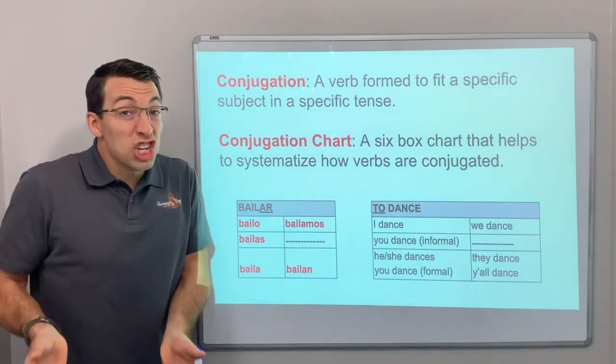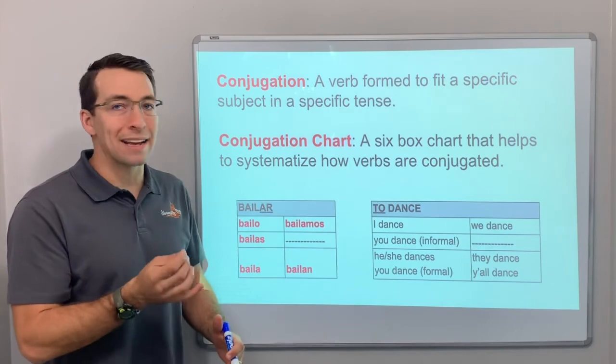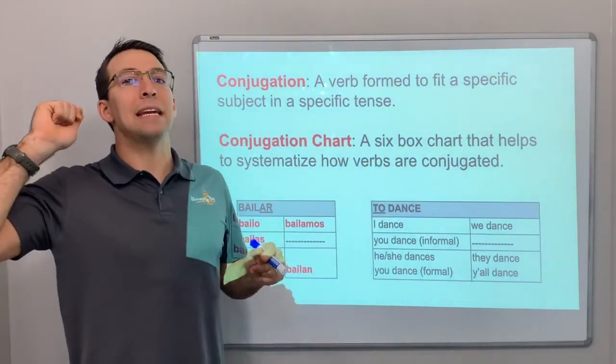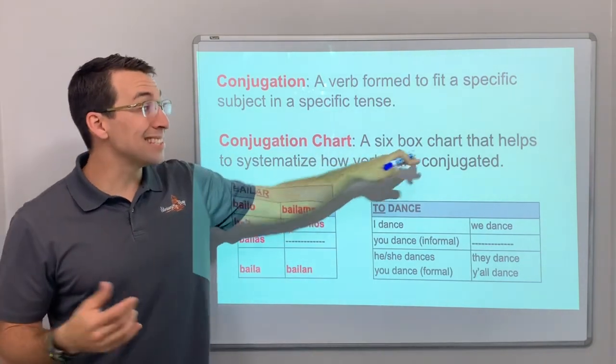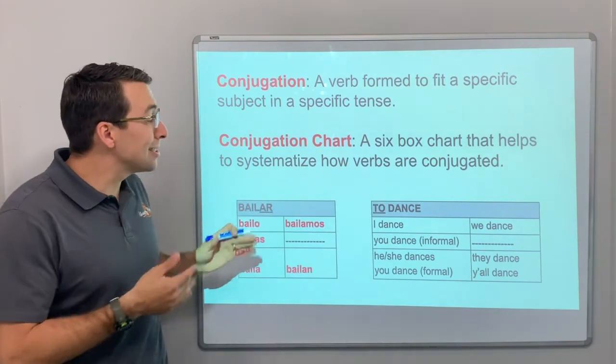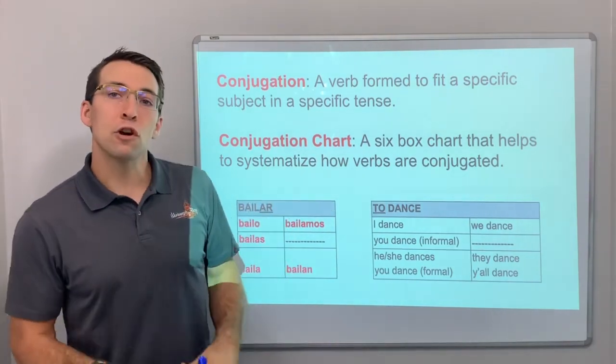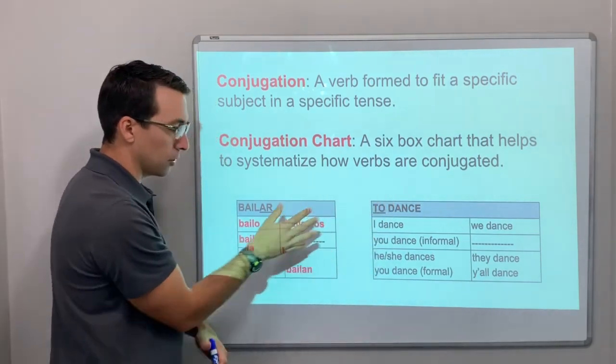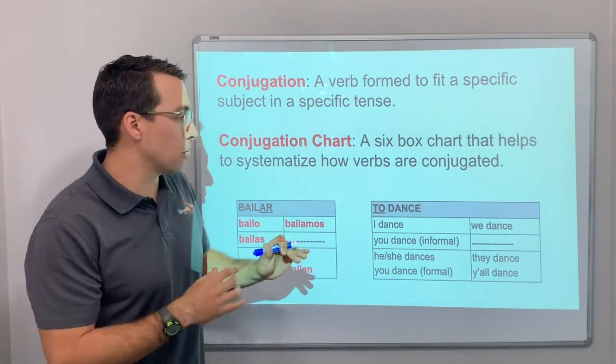So a conjugation is that verb form to fit a specific subject in a specific tense. And then a conjugation chart is a six-box chart that helps to systematize how verbs are conjugated. This works for English, it works for Spanish, it works for any language.